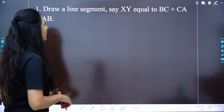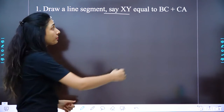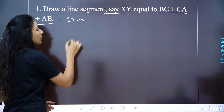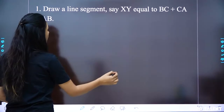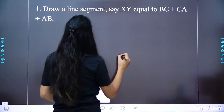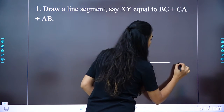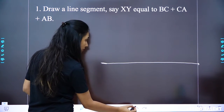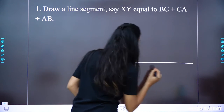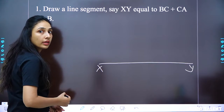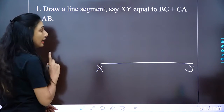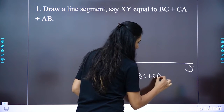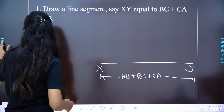The first step of construction: draw a line segment XY equal to BC + CA + AB — let's suppose it's given as 10 centimeters. So we draw line XY, which equals AB + BC + CA, that is, the perimeter of the triangle.